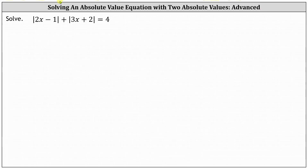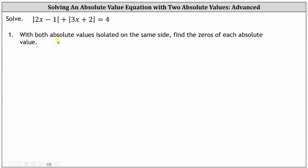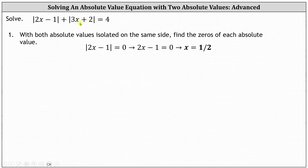We want to solve the given absolute value equation: the absolute value of the quantity 2x minus 1, plus the absolute value of the quantity 3x plus 2, equals 4. This is a fairly involved absolute value equation to solve. For step one, with the absolute values isolated on one side of the equation, we begin by determining the zeros of each absolute value. The absolute value of 2x minus 1 equals zero when x equals 1½, and the absolute value of 3x plus 2 equals zero when x equals negative ⅔.